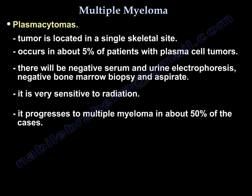Plasmacytoma is a tumor at a single skeletal site, occurring in about 5% of patients with plasma cell tumors. It presents with negative serum and urine protein electrophoresis, negative bone marrow biopsy and aspirate. It is very sensitive to radiation but progresses to multiple myeloma in about 50% of cases.